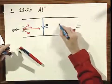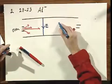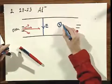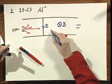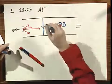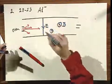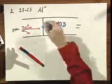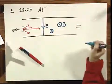In addition, I have a magnetic field B which is pointing in the paper, and I assume it is uniform everywhere.